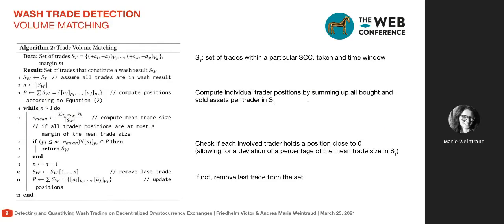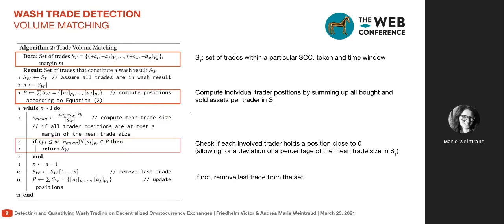In the second step, we look at trades these SCCs conducted among themselves and group them by token and time window — for example, one hour — using multiple passes to capture different temporal trading patterns. For each trader in the set, we calculate their individual trading position as the sum of all assets bought and sold, then check whether each trader holds a position close to zero, meaning they bought and sold approximately the same number of assets. If this condition is met, we've found a wash trade; if not, we remove the last trade and check again. This way we check only N subsets rather than all subsets.